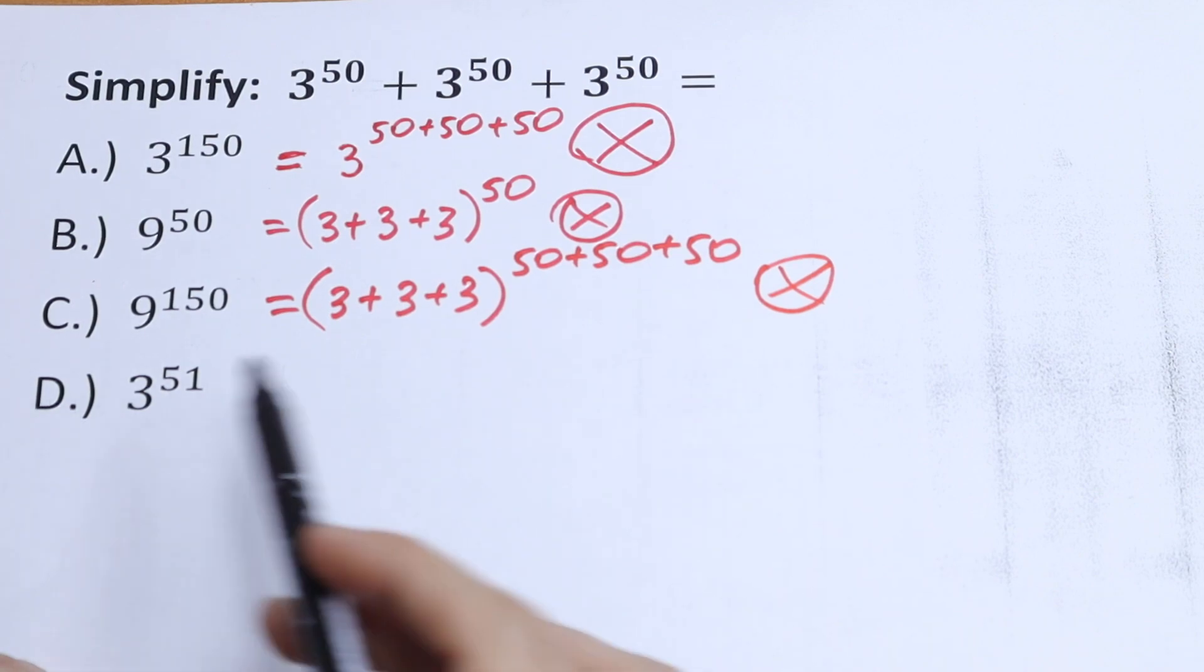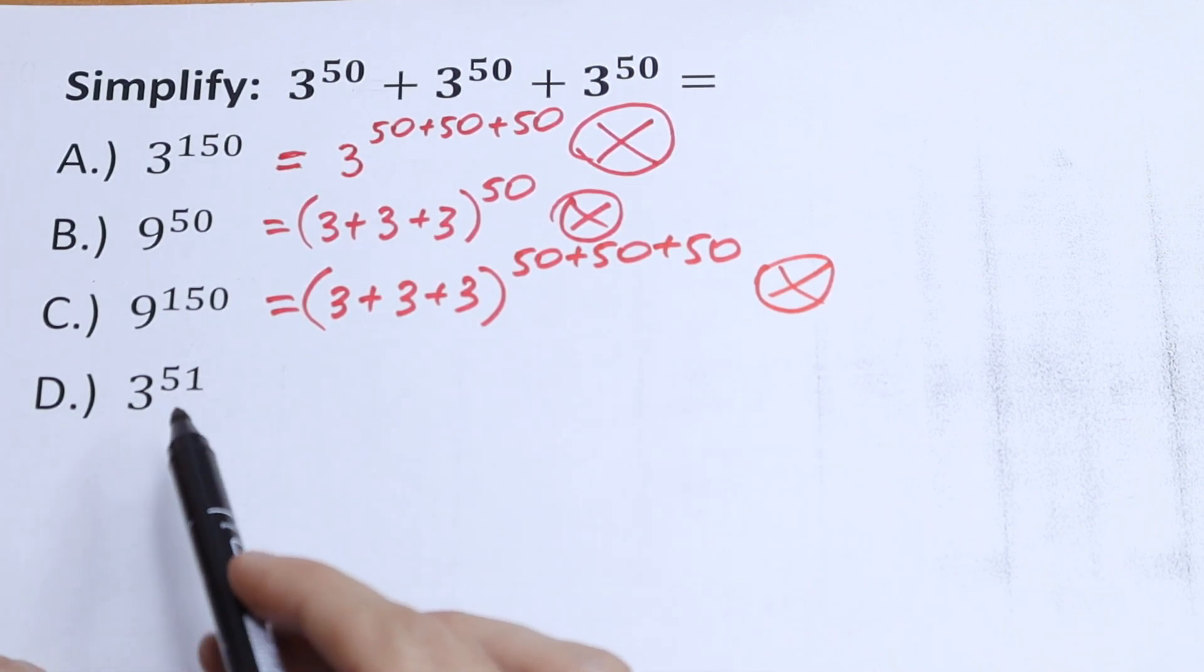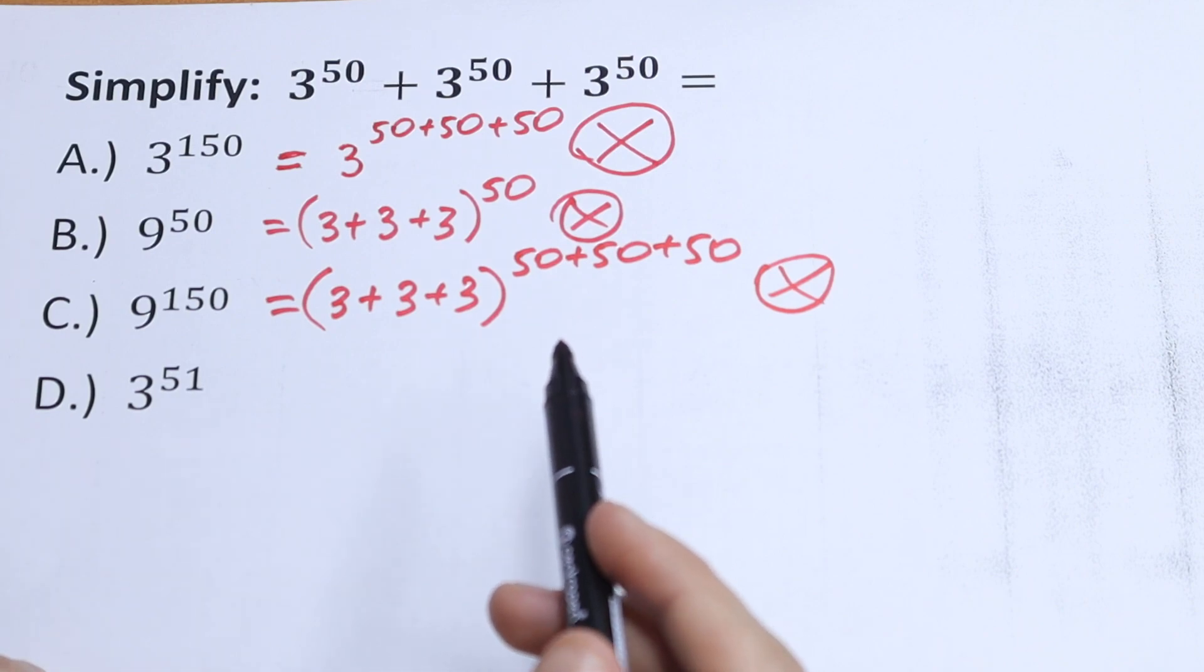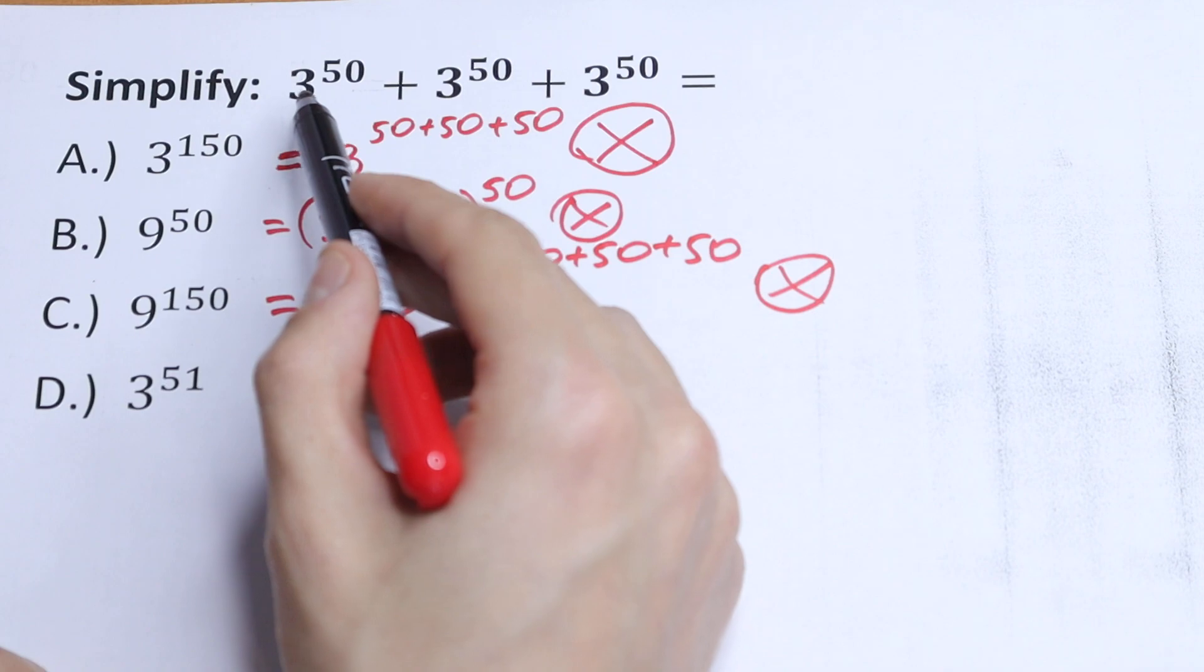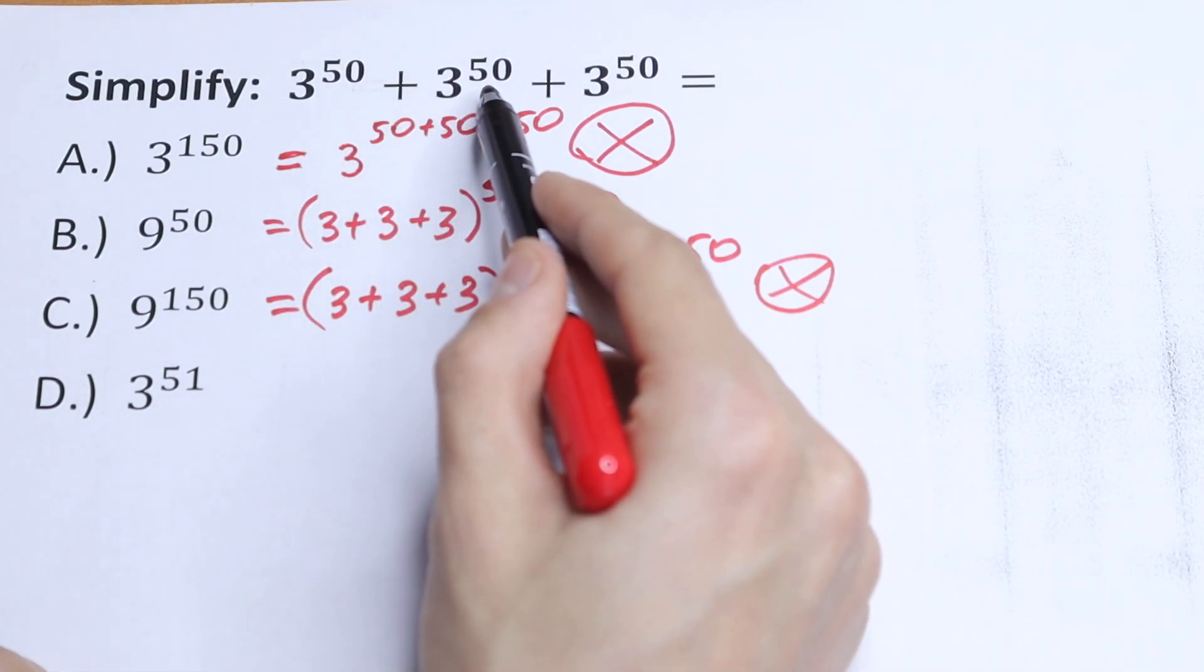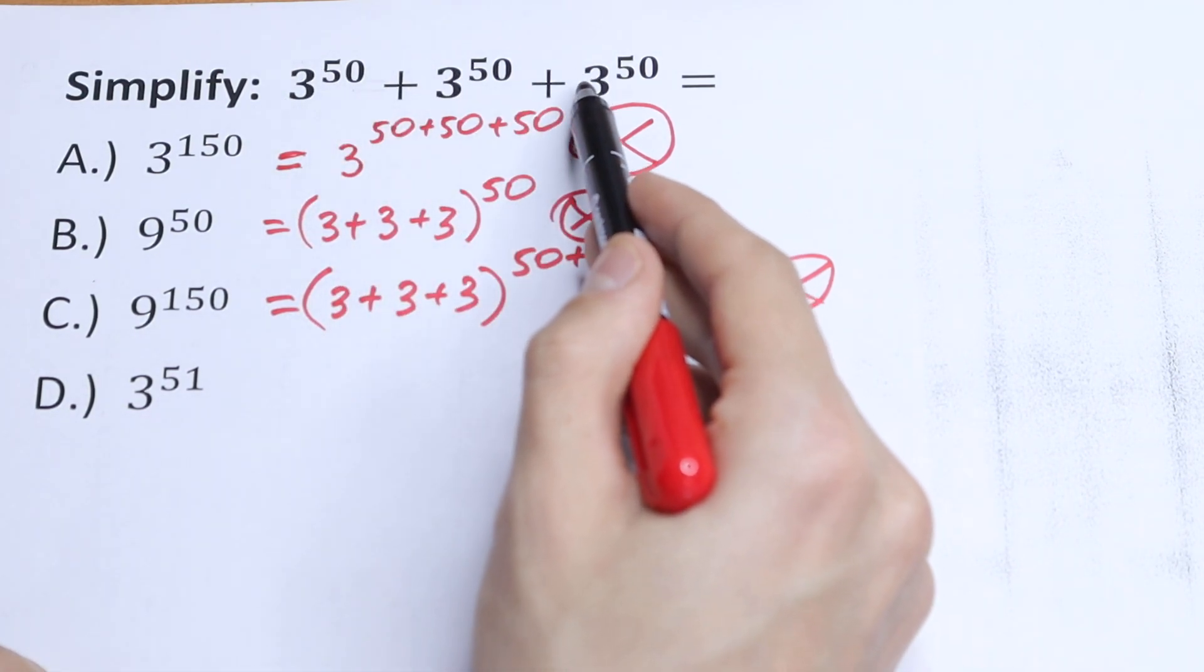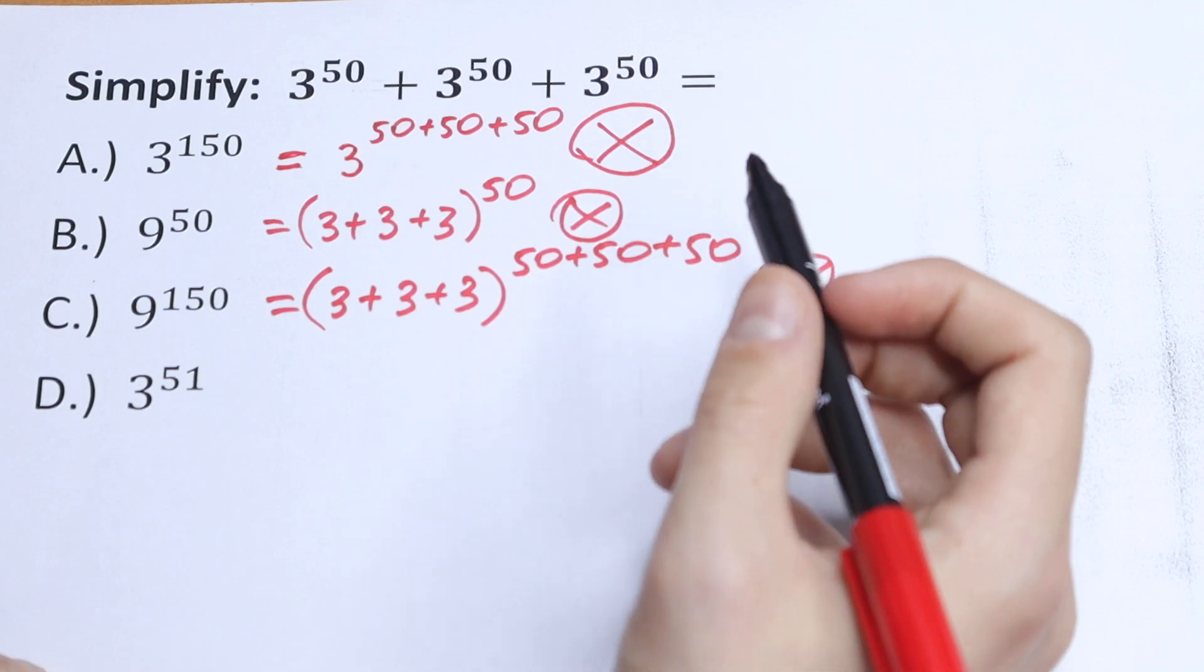The last option, option D, 3 to the power 51. I want to say that this option will be correct. Why? You asked me why. Of course, this 3 to the 50th power and this 3 to the 50th power are the same, so this will be our x.